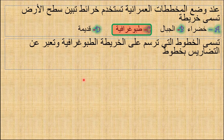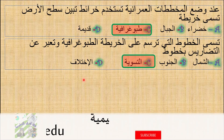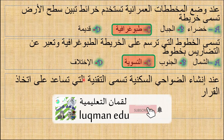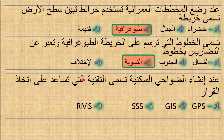تسمى الخطوط التي تُرسم على الخريطة الطبغرافية وتعبّر عن التضاريس بخطوط - الخيارات: الشمال، الجنوب، التسوية، الاختلاف - الجواب الصحيح: خطوط التسوية. عند إنشاء الضواحي السكنية تسمى التقنية التي تساعدنا على اتخاذ القرار - الخيارات: GPS، GIS، SSS، RMS - الجواب الصحيح: GIS، أي نظام المعلومات الجغرافية.